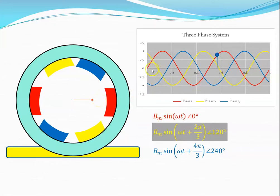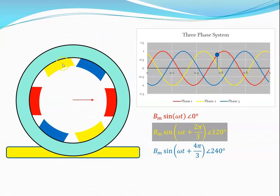Omega is two pi times the frequency. That vector, or the magnitude of that vector, always acts in this plane which is at zero degrees, because this is mechanically how the stator is wound. Similarly for the yellow phase, if we go around 120 degrees, the windings for that pair of poles is at 120 degrees from this pair of poles.